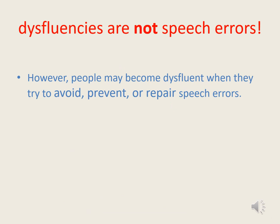Regarding the relationship between speech errors and disfluencies, perhaps the first thing we need to be absolutely clear about is that disfluencies are not speech errors. However, people may become disfluent when they try to avoid, prevent, or repair speech errors. As mentioned in the previous slideshow, it's likely that most people who stammer have some underlying impairment that predisposes them to producing a lot of errors when they speak. Whether or not those speech errors actually lead to stammering depends on how they respond to those errors.